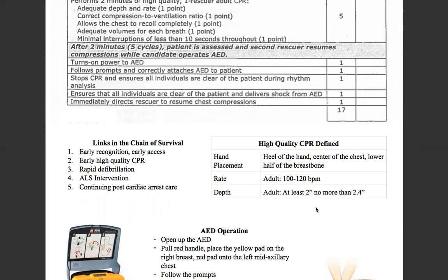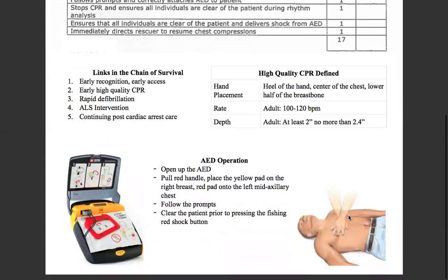Summary of high quality CPR: hand placement — heel to hand, center of the chest, lower half of the breastbone, as you can see in this picture. The rate is 100 to 120 beats per minute, and the depth for adults should be at least two inches, no more than 2.4 inches. The ratio — National Registry and AHA standards — is 30 compressions to two ventilations. Make sure you get chest rise and a good face-to-mask seal with your pocket mask.